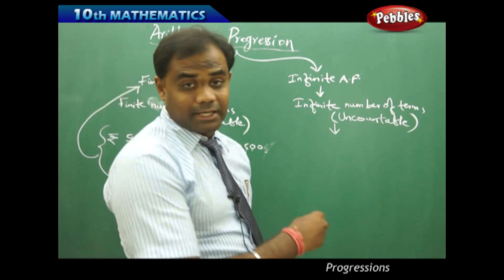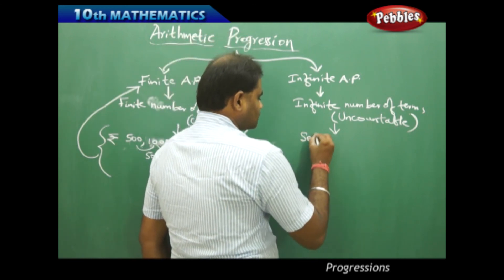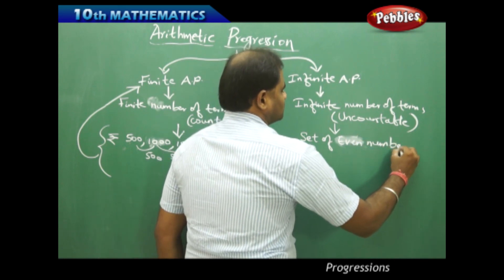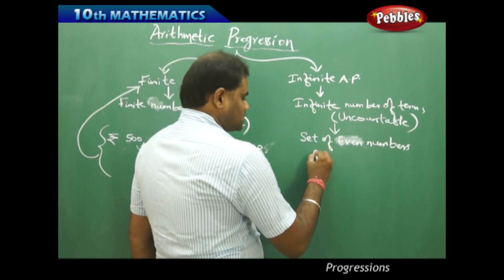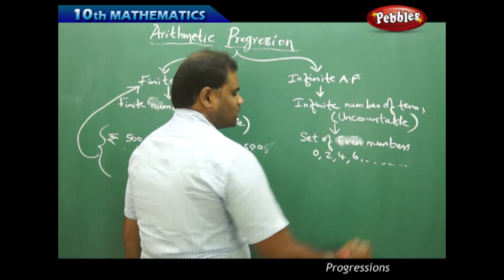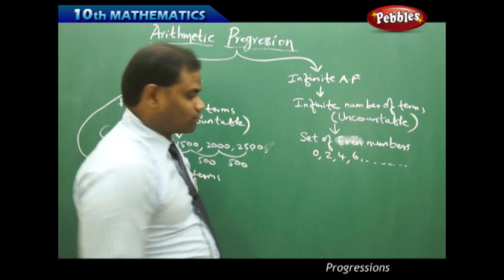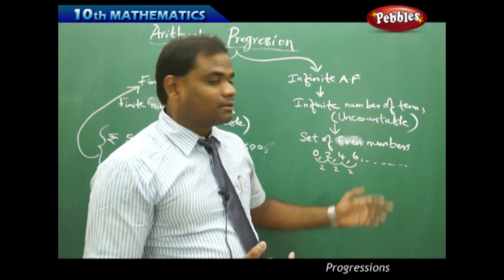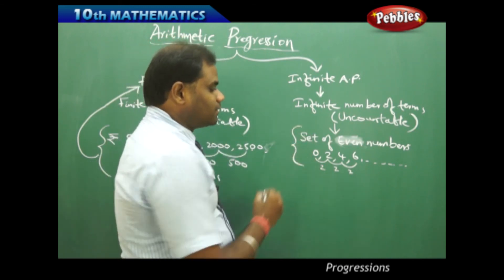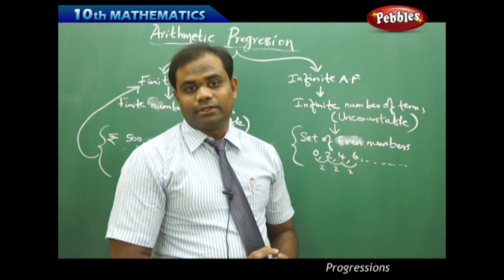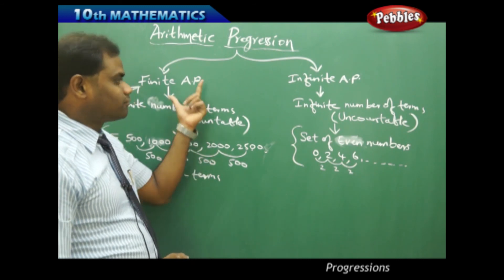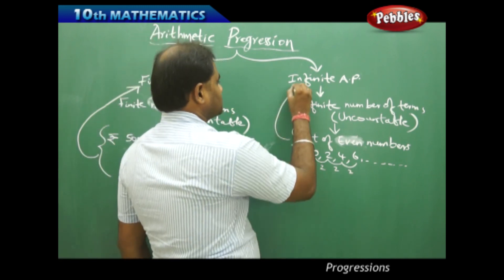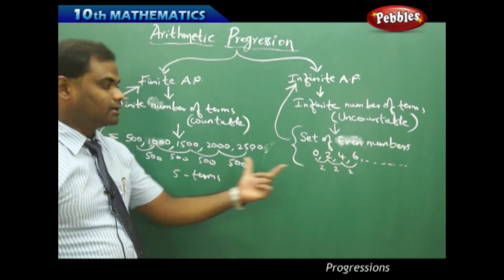On the other hand, consider the set of even numbers: 0, 2, 4, 6, and so on. The common difference is 2, making it an arithmetic progression. However, even numbers never end — there are infinitely many of them. So the set of even numbers is an example of an infinite arithmetic progression, as opposed to the bank deposit example which is finite.